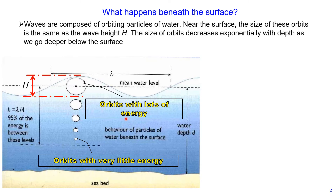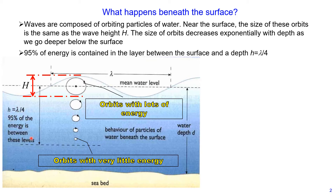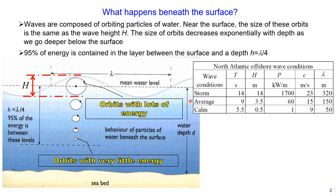Orbits closer to the seabed have very little energy, while orbits closer to the surface have lots of energy. Approximately 95% of energy is contained within the layer between the surface and the depth equal to wavelength divided by 4. If we consider conditions for waves at North Atlantic offshore, we usually should consider storm conditions, average conditions, and calm conditions.